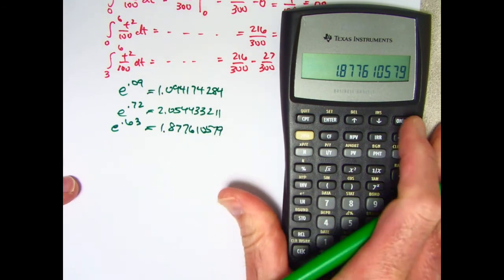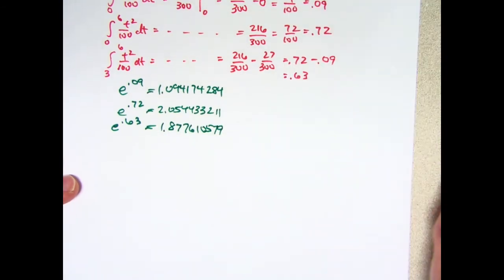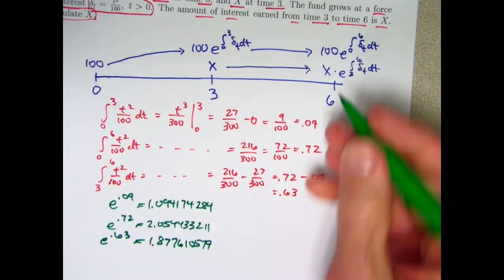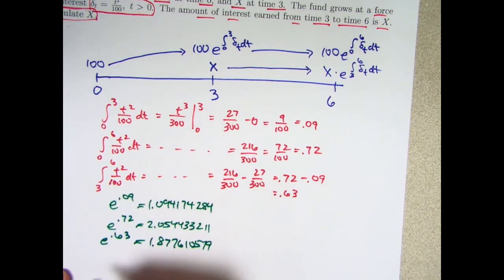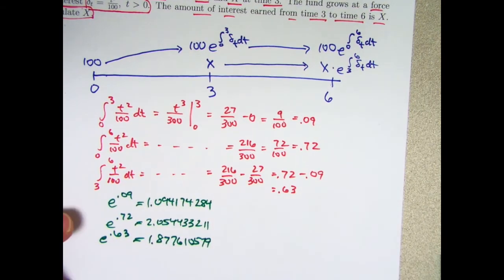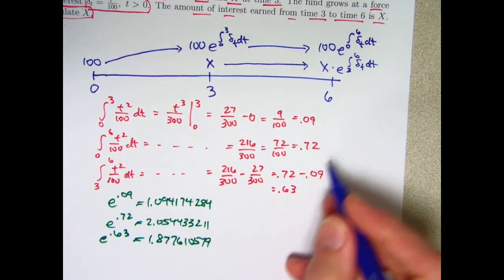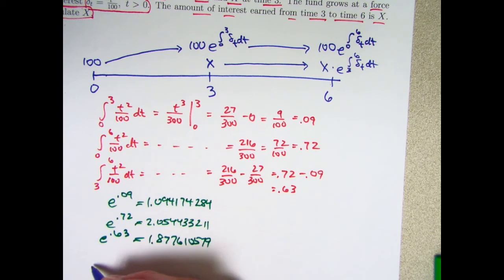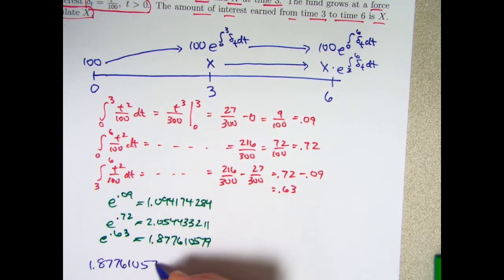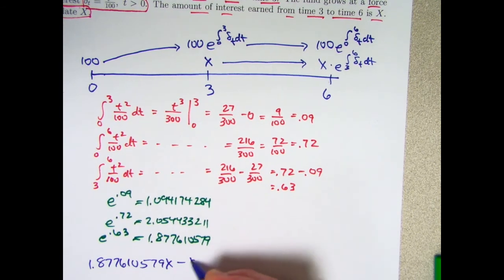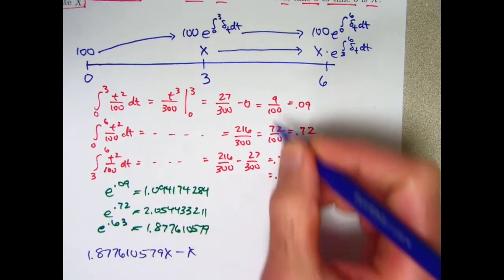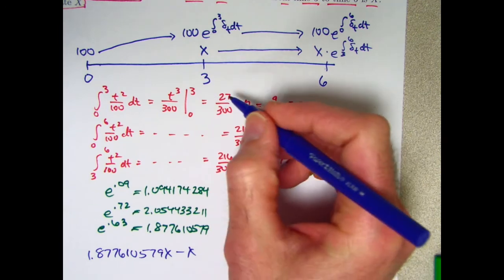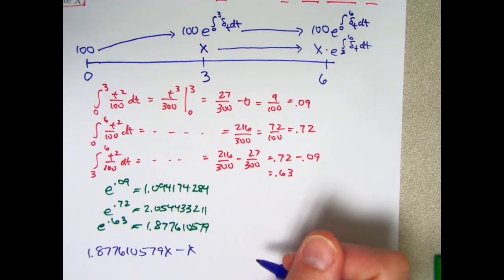And now I'm ready to set up my equation. Think back up here. This minus this. What's that going to be? This was e to that integral, which was this quantity here. 1.877610579 times x minus x. That difference will be the interest earned on the deposit of x at time 3 to time 6.